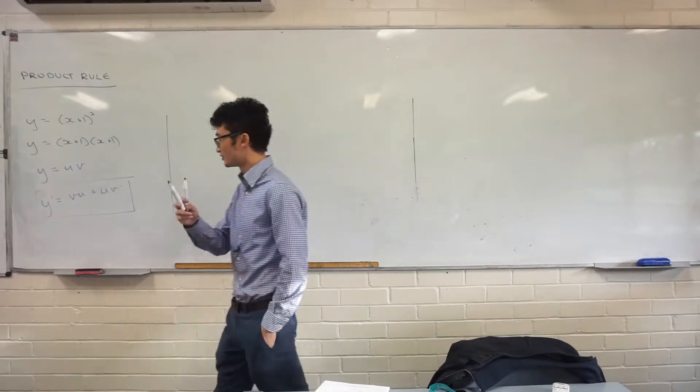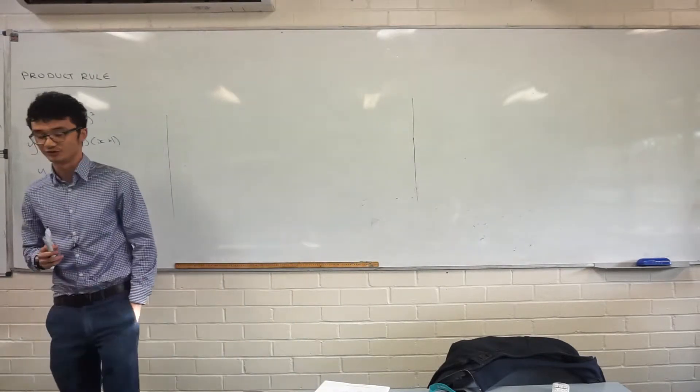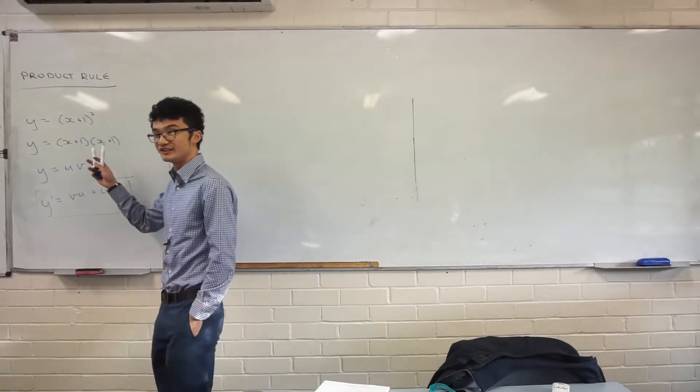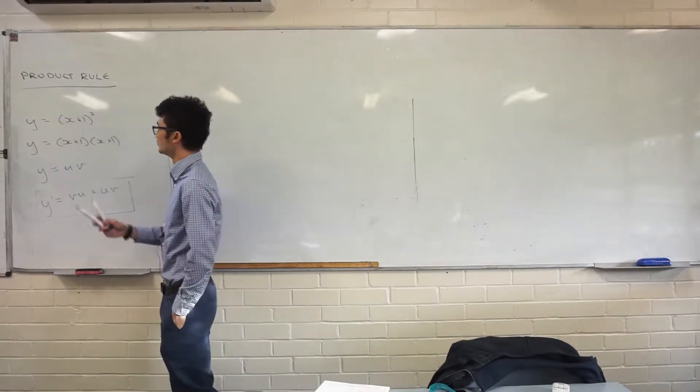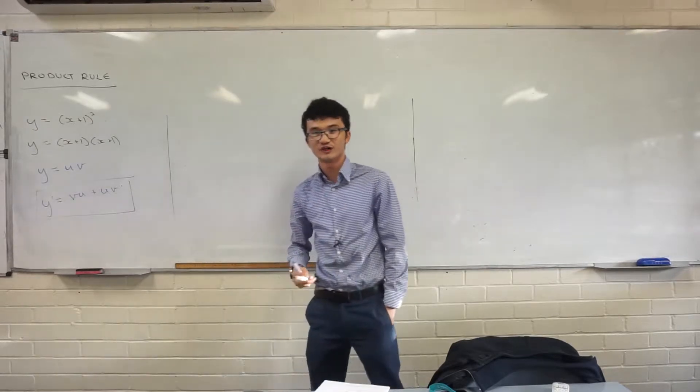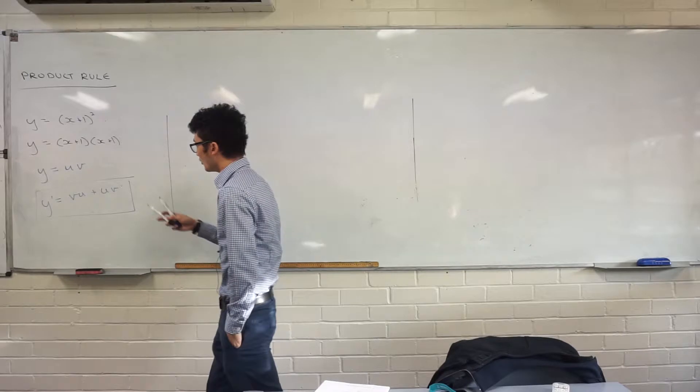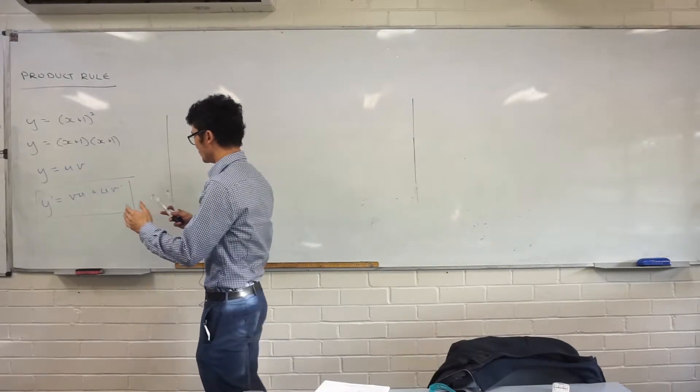How does that work? Great question. I want to show you afterwards because I actually think it's a very interesting proof. Now, I'm using this example because we've seen this example before. If you remember, we can use the chain rule to do this, or function of functional, and we get 2x plus 2. Let's just verify that that works with this one.